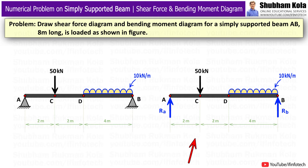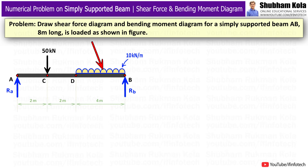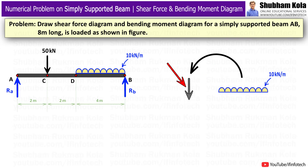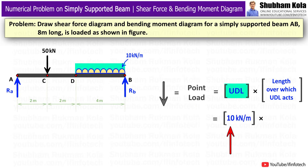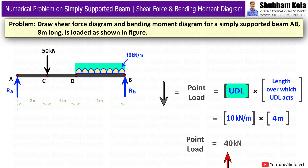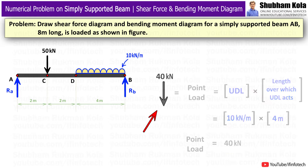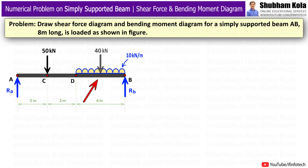First, I will draw the free body diagram for this beam section. To solve this numerical problem, we first have to convert the uniformly distributed load into a point load. To do this, I will multiply the UDL value by the length over which it acts: 10 kN/m multiplied by 4m gives a converted point load of 40 kN. This converted point load acts at the midpoint of the length over which the UDL acts.